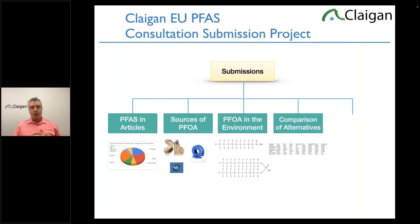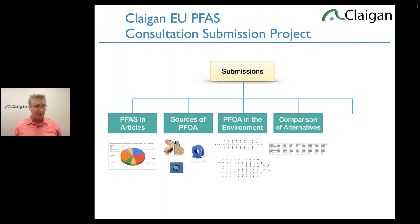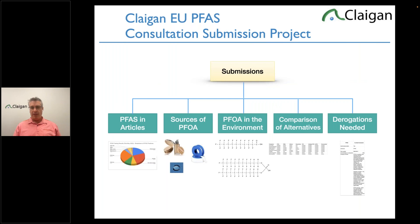There's also a very technical submission — a comparison of all the different materials. We're comparing Teflon, Viton, and Kalrez — fluoroelastomers — against PEEK, stainless steel, silicone, and polyurethane, with pros and cons. Once you've done the pros and cons and the alternatives, a lot of the uses are pretty self-evident why you need PTFE. The derogation section has over 50 specific exemptions needed — it's amazing what PFAS is used for.